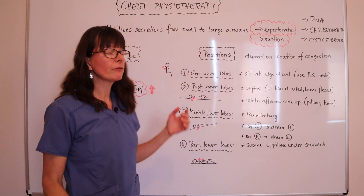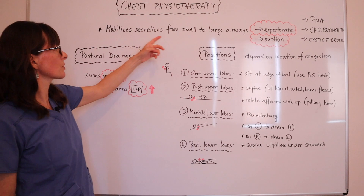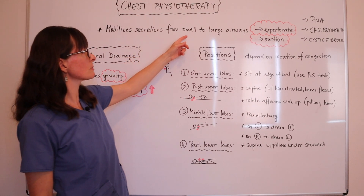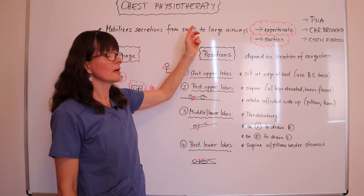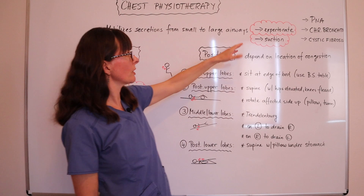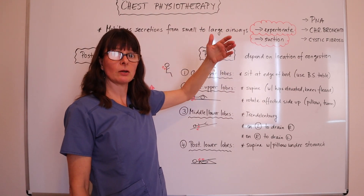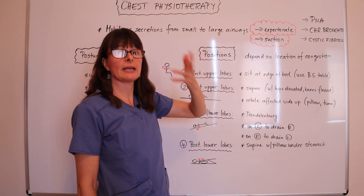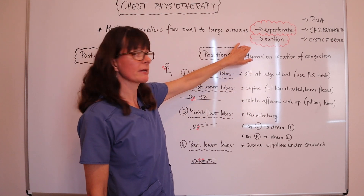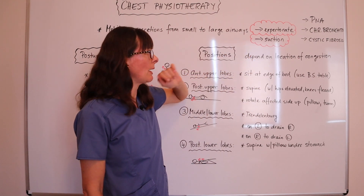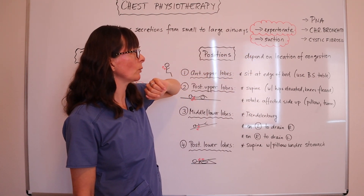As a quick review, chest physiotherapy helps to mobilize secretions from the small to the large airways so that the patient is then able to expectorate or spit out the secretions. Or if they cannot do that, we help them by suctioning their mouth and getting rid of the secretions that way.